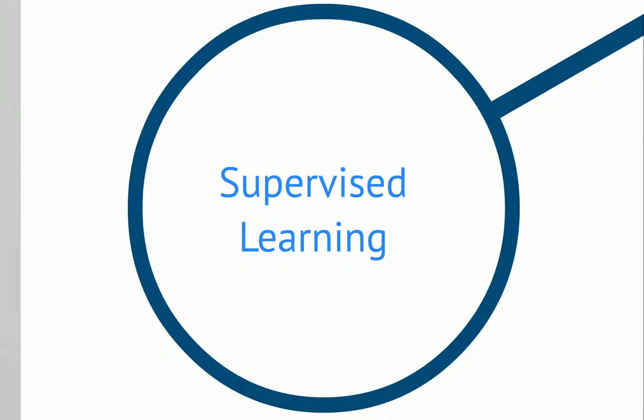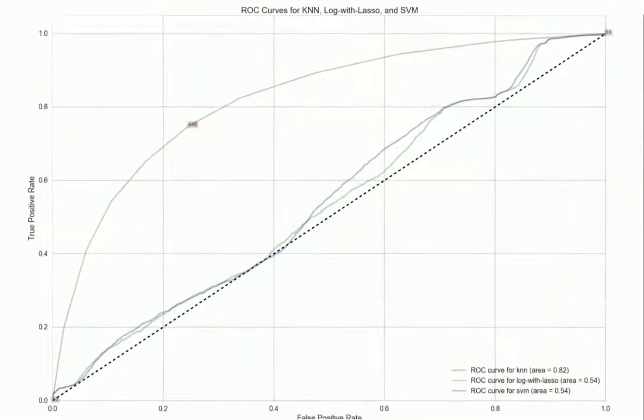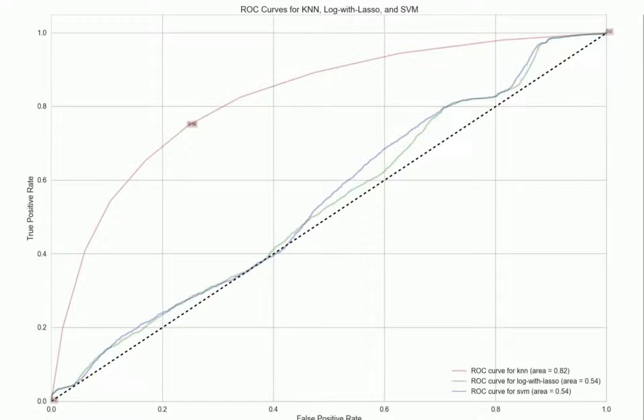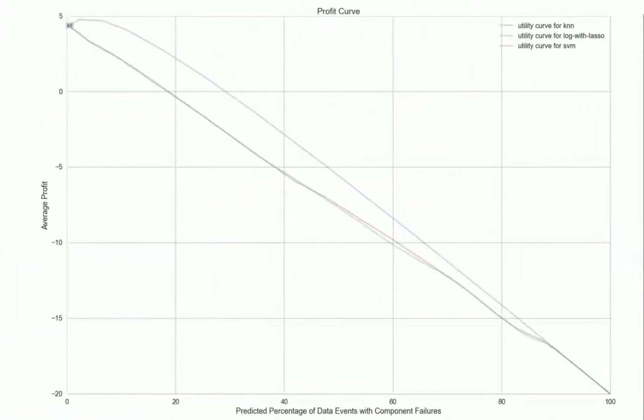For our second problem we did supervised learning. Here we compared three different classifiers to replace the computationally expensive feature 8 measure with cheaper, simpler measurements. We evaluated the classifiers on the basis of accuracy, overfitting and profit curves.